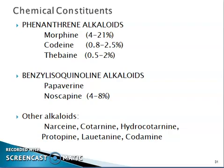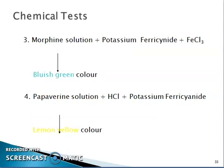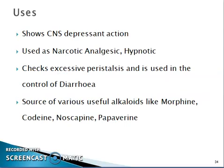Chemical tests: First, opium is tested for meconic acid — opium dissolved in water, filtrate plus ferric chloride solution gives a reddish-purple color. Second, morphine plus concentrated H₂SO₄ plus HNO₃ gives a dark violet color. Third, morphine solution plus potassium ferricyanide plus FeCl₃ gives a bluish-green color. Fourth, papaverine solution plus HCl plus potassium ferricyanide gives a lemon yellow color.